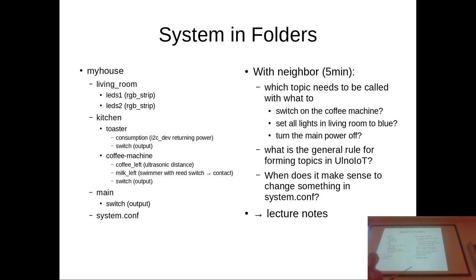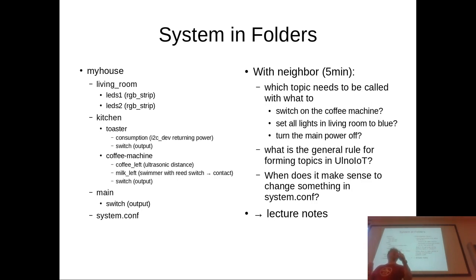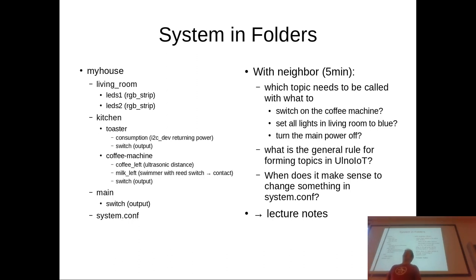Okay, first thing: how do you switch on the coffee machine — what is the MQTT topic? It starts with 'kitchen' — yes — and then: kitchen/coffee_machine/switch/set. That's the whole topic. Good. Now, how do you set all the lights in the living room to blue? How many commands do you need to issue? Just one with 'living room'? That would be nice, but it doesn't actually work — you need two. So what are the topics for those two commands?